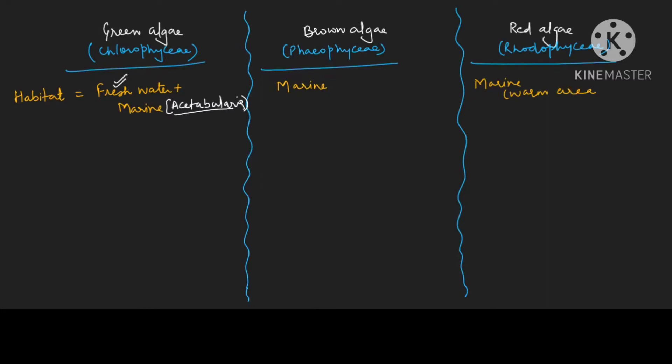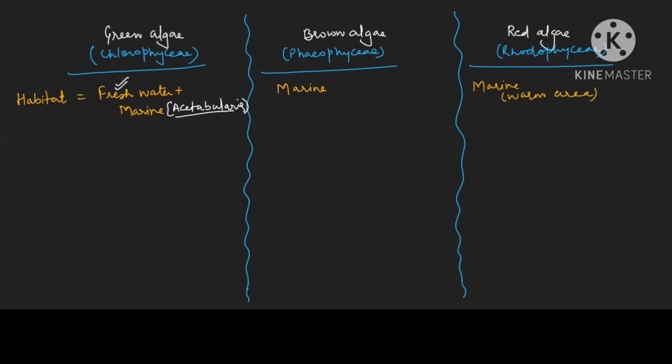Now the question area from this: if they ask which algae is found in the tropical sea — tropical means warm area — your answer will be red algae. And if they ask which algae will be seen in the temperate sea, your answer will be brown algae, because sea means marine habitat.